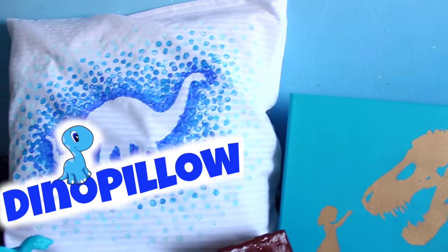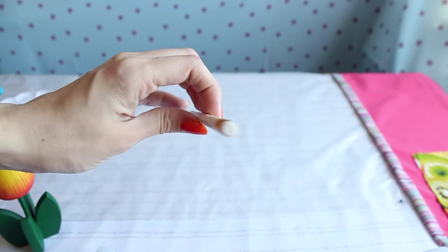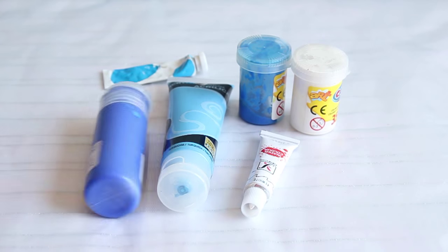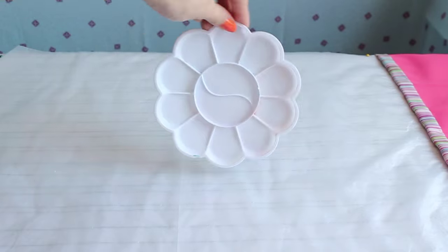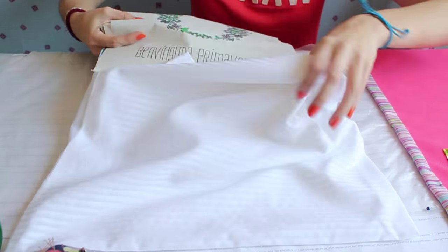The first DIY is this super cute dino pillow. It's super easy! You will only need a pillowcase, a pencil with an eraser on top, paint in the color of your choice, something to create the shapes, and a dino stencil. Just print it and cut it. You can do any dinosaur shape you want.